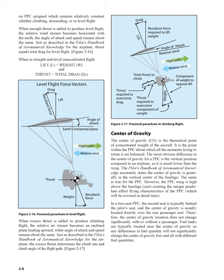The center of gravity (CG) is the theoretical point of concentrated weight of the aircraft — the point within the PPC about which all moments trying to rotate it are balanced. The most obvious difference in the CG for a PPC is its vertical position, which is much lower than the wing, creating the unique pendulum effect flying characteristics. In a two-seat PPC, the second seat is typically behind the pilot's seat, and the CG is usually located directly over the rear passenger seat, so it does not change significantly with or without a passenger. Fuel tanks are typically located near the CG so differences in fuel quantity will not significantly change the CG fore and aft.